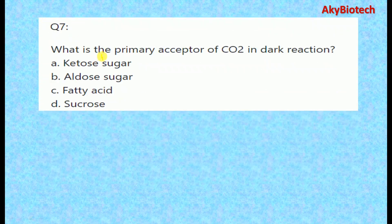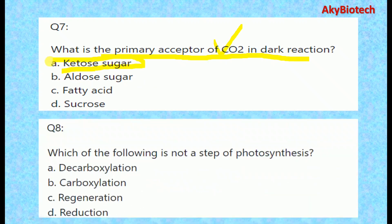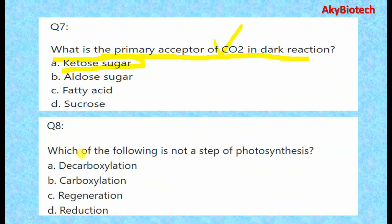Question seven: What is the primary acceptor of carbon dioxide in the dark reaction? The primary acceptor of carbon dioxide in the dark reaction is a ketose sugar.